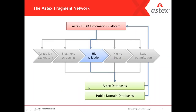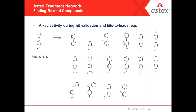The next phase of the fragment discovery process is hit validation. At this phase you have a fragment hit and want to do some very initial SAR — very local SAR — to establish whether it's a singleton and see what's going on locally. The kinds of things you'd want to do to a compound include stripping off parts of it, putting small substituents around different parts, replacing the OH with NH2 or something else, replacing one of the rings with pyridine or cyclohexyl, or replacing the linker system with a methylene.